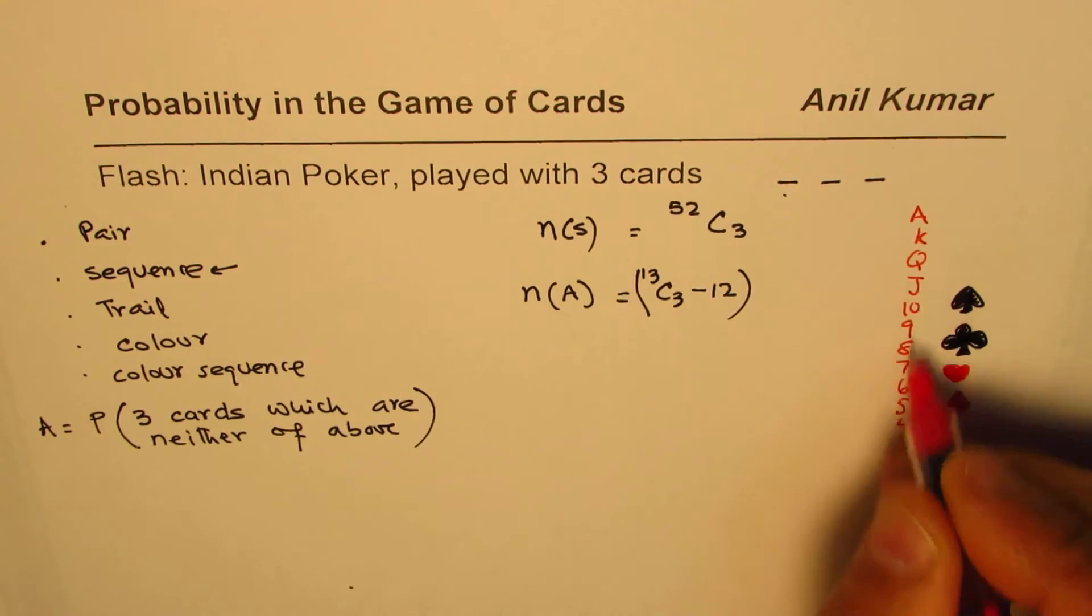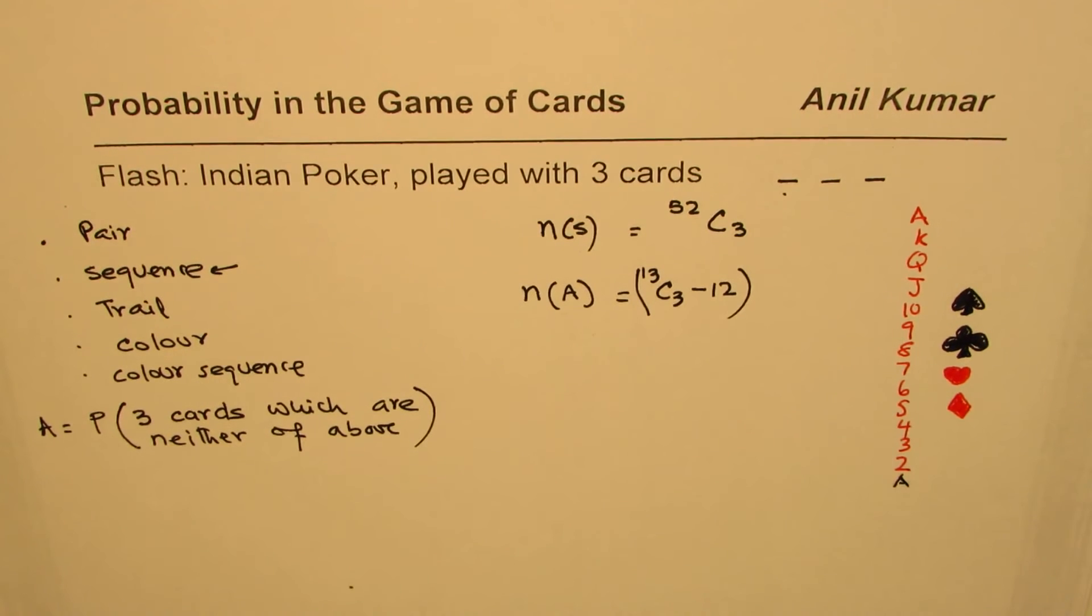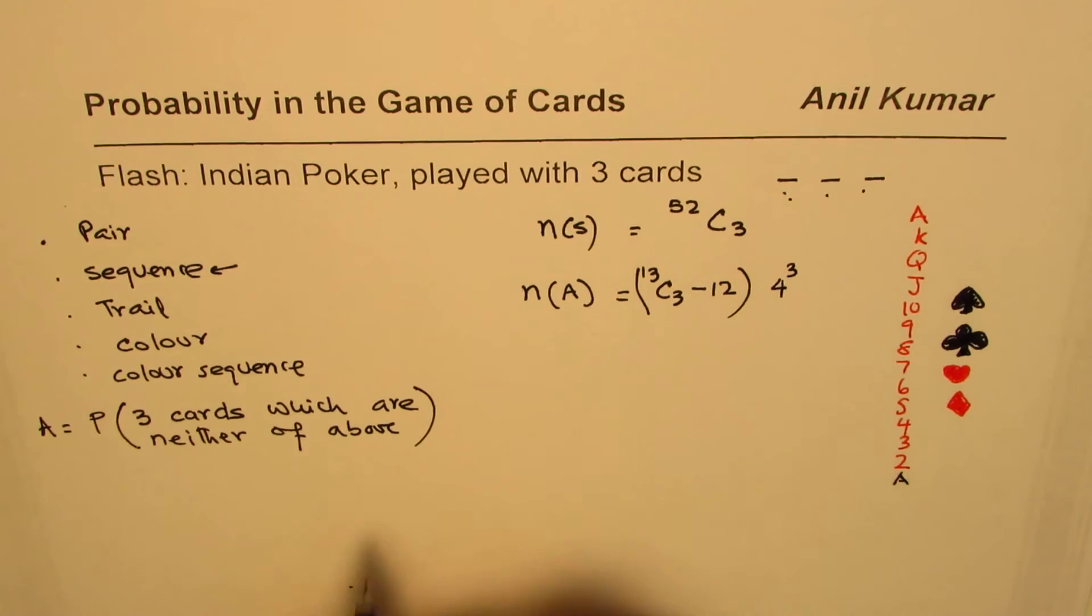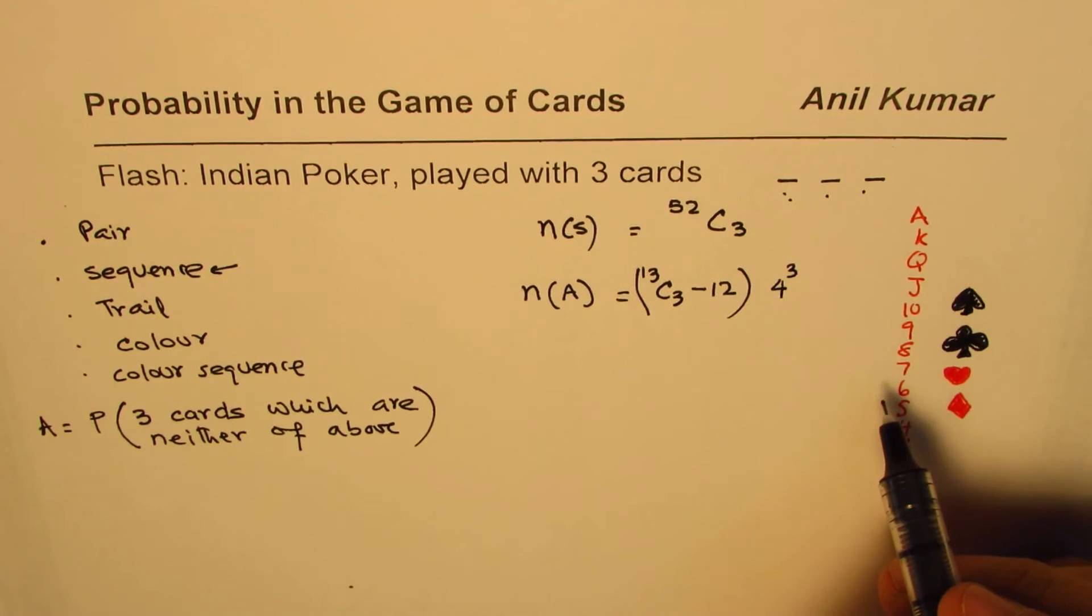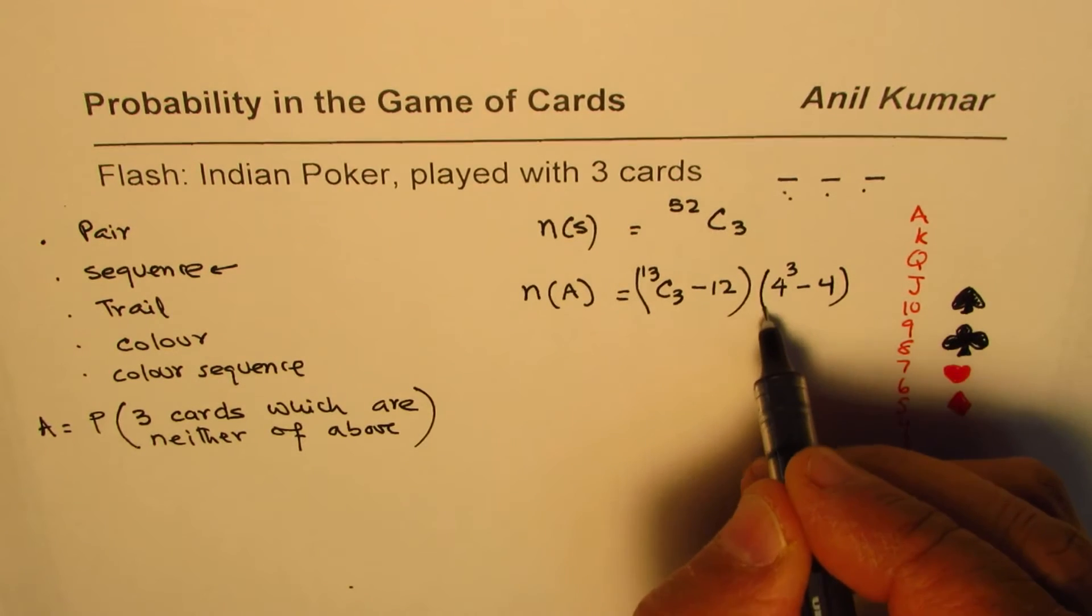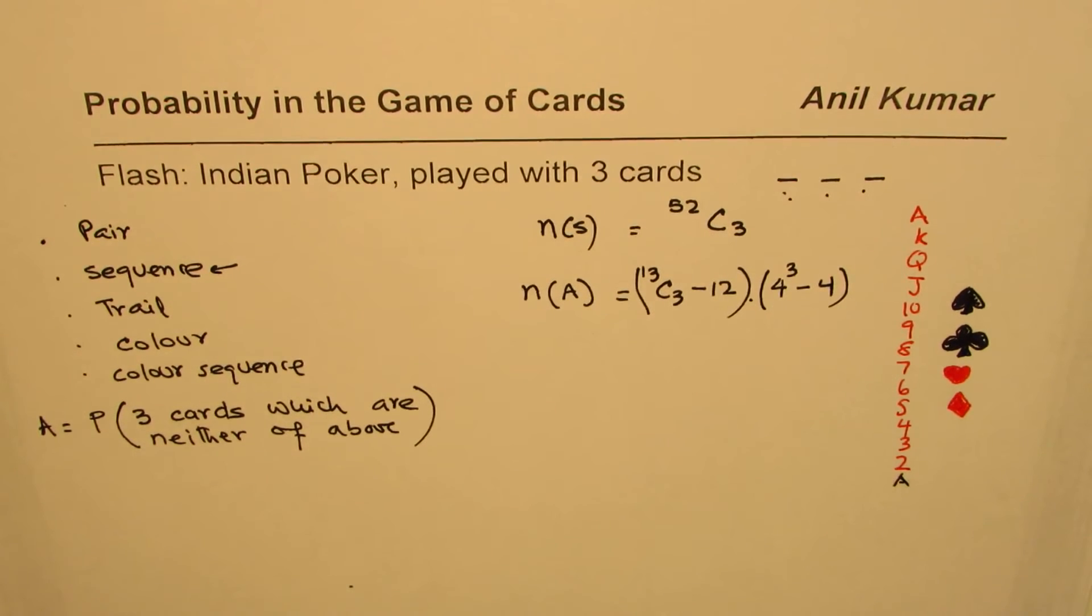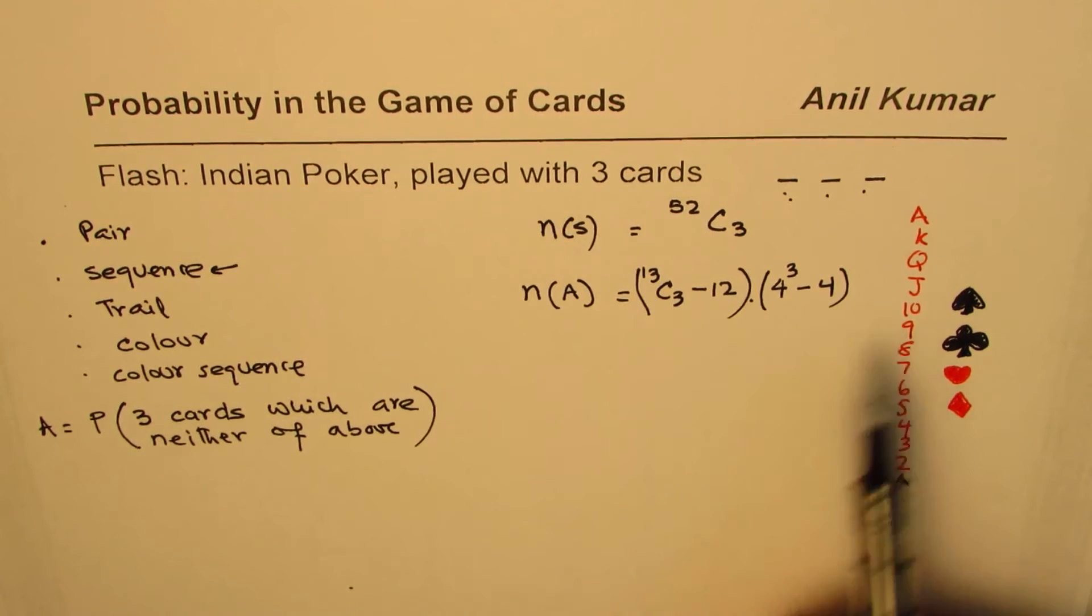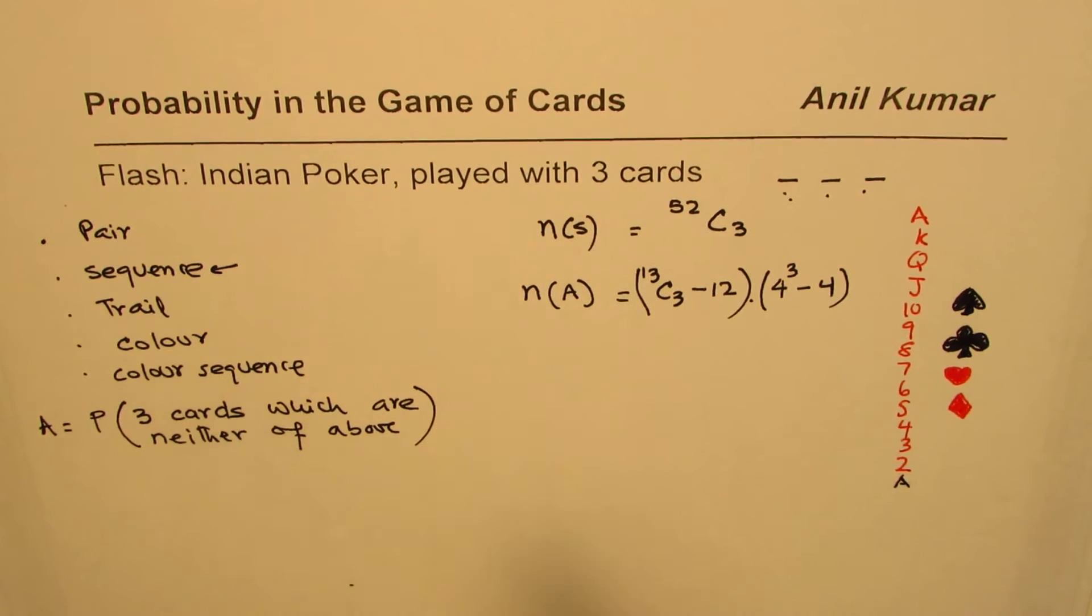So for each value we have four options, correct? So we get 4 cube, three places, correct? Out of these there'll be four of same kind, so we'll take away those four. Do you see that? Then their product is going to give us all the outcomes which will not include a sequence of pair or a color.